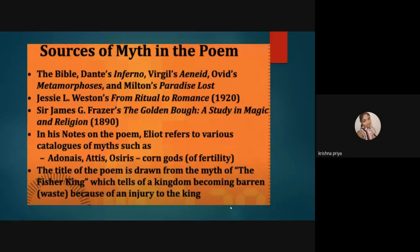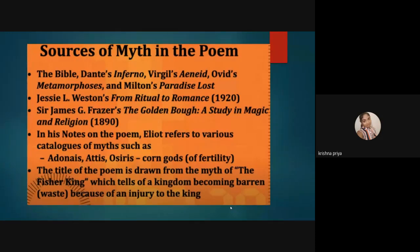The Wasteland is an intertextual work — it is not pure. It has borrowed materials from the Bible, Dante's Inferno, Ovid's Metamorphoses, Milton's Paradise Lost, and others. The chief sources of the work are Jessie L. Weston's From Ritual to Romance, published in 1920, and James Frazer's The Golden Bough: A Study in Magic and Religion. Other mythical elements include the myth of fertility through immersing effigies in water, the myth of the Fisher King, and the Holy Grail.